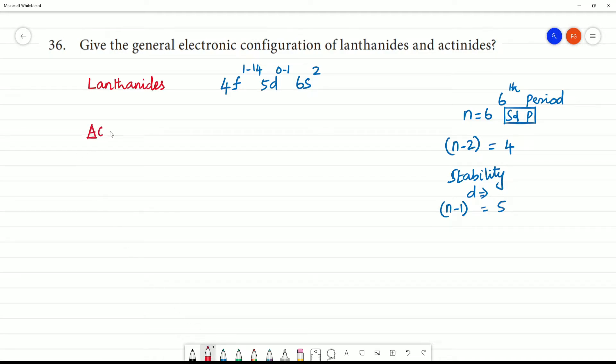Now, we have to look at actinides. We will look at actinides. Next, actinides. Actinides belong to n. This belongs to 7th period. 7th period. n is equal to 7. That is 7s.